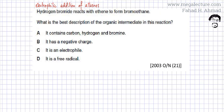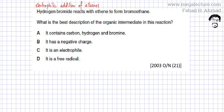The question reads that hydrogen bromide reacts with ethene to form bromoethane. This is an example of an electrophilic addition reaction. The question asks: what is the best description of the organic intermediate of this reaction? For this, we need to first figure out the reaction mechanism of HBr with ethene to form bromoethane.